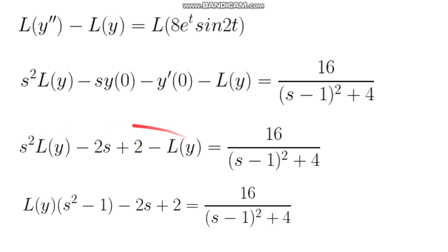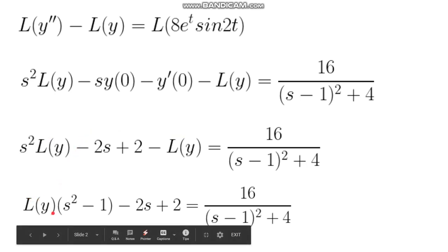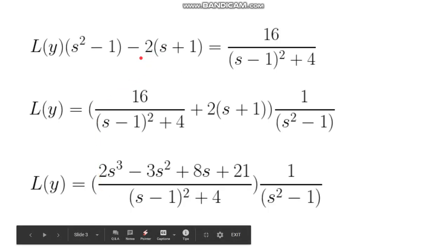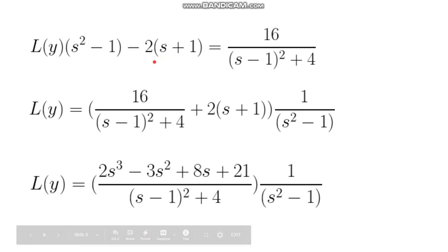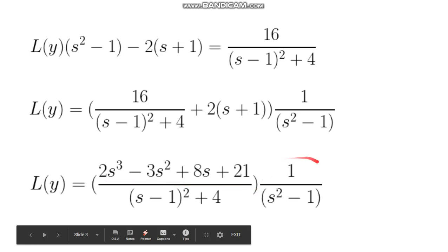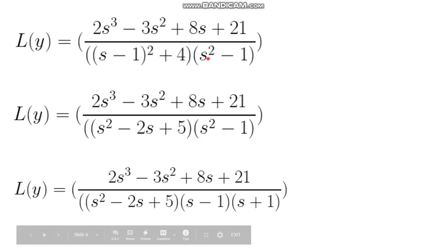Here I just group the Laplaces, factor out L(y), and then I do a little more cleaning up here. Then I start adding this, 2 times s plus 1, and then multiply by 1 over s squared minus 1. We add this to here and multiply by 1 over s squared minus 1.